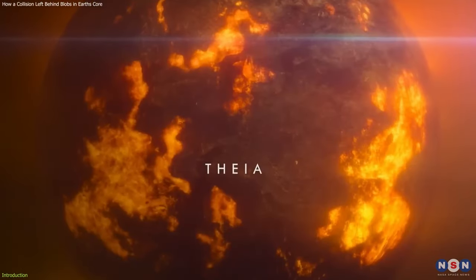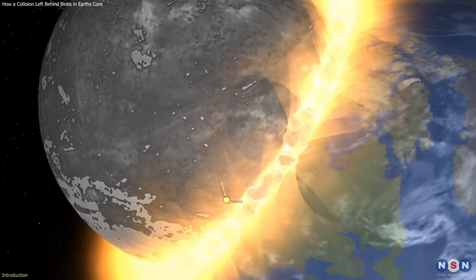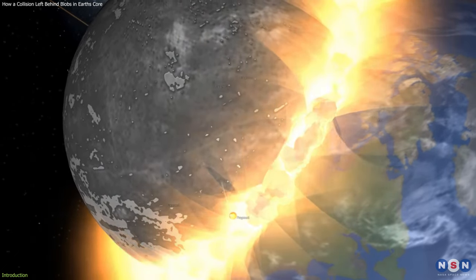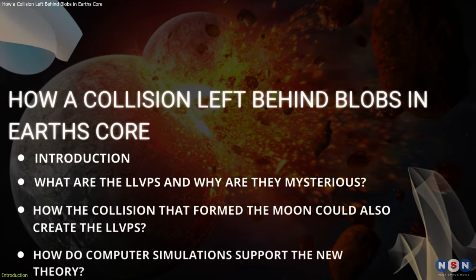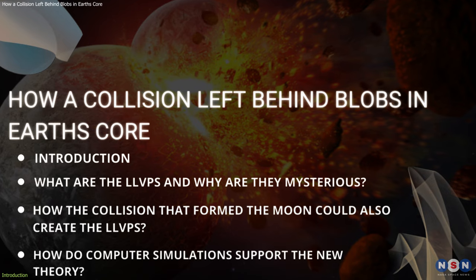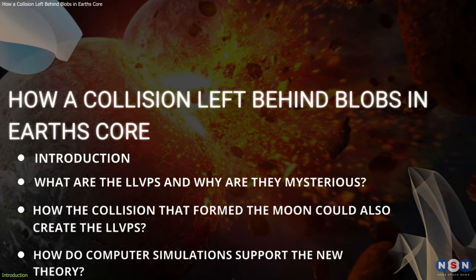But what happened to Theia? Did it completely vaporize or merge with Earth? Or did it leave behind some traces of its existence on our planet? In this video, we will explore a new theory that suggests that the collision that formed the Moon could also be the cause of mysterious blobs hidden in Earth's core.